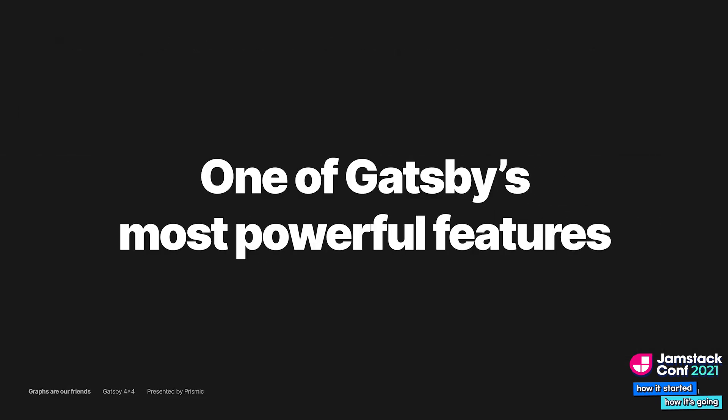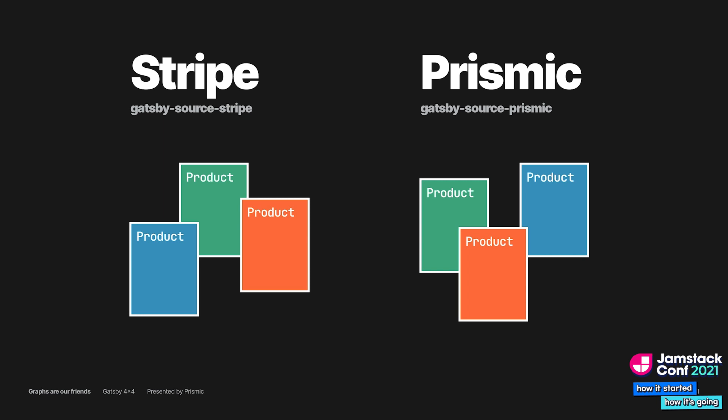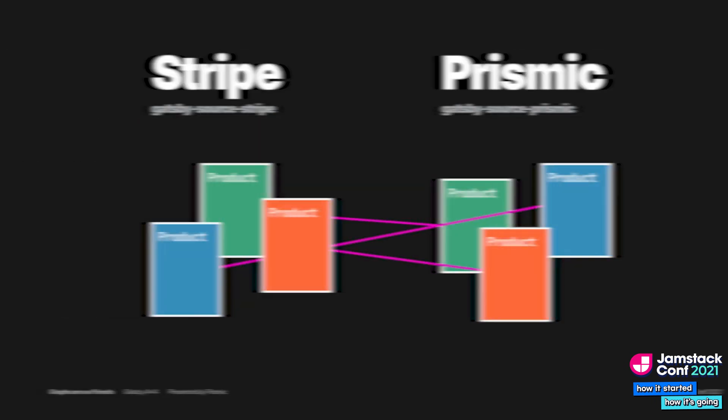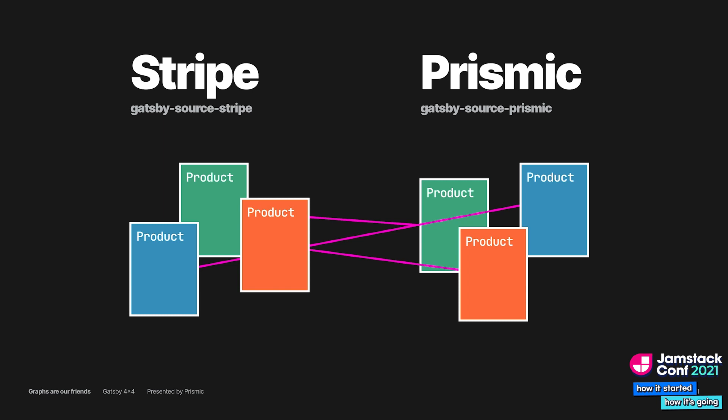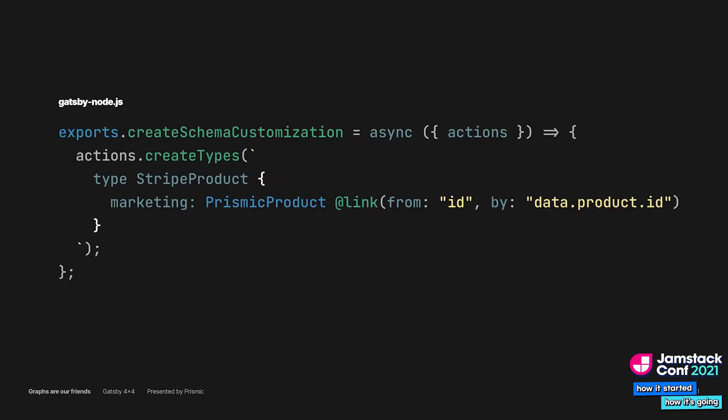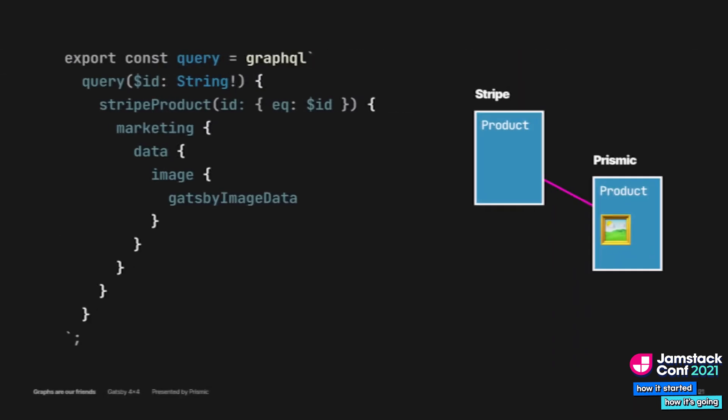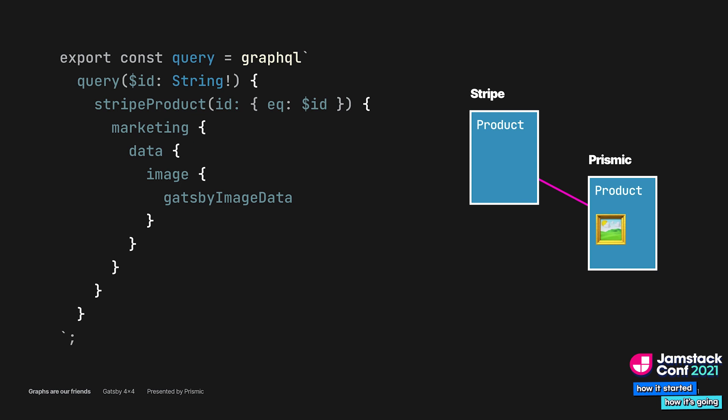Gatsby's GraphQL API is one of Gatsby's most powerful features — it enables complex websites to connect data in a natural way. For example, you can use Gatsby Source Stripe to fetch a list of products from your Stripe account, and Gatsby Source Prismic to fetch marketing content about the product from your CMS. Then you can use the GraphQL API to link the data together. Your CMS only needs to save the ID of a product in order to make use of the latest product information.